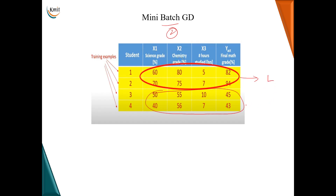The local minima is calculated for each batch, and whichever gives the minimum value is finalized. The batch size must be greater than one — if it were one, that would be stochastic gradient descent — and less than the total number of training examples. With four training examples, a batch size of two satisfies both conditions.